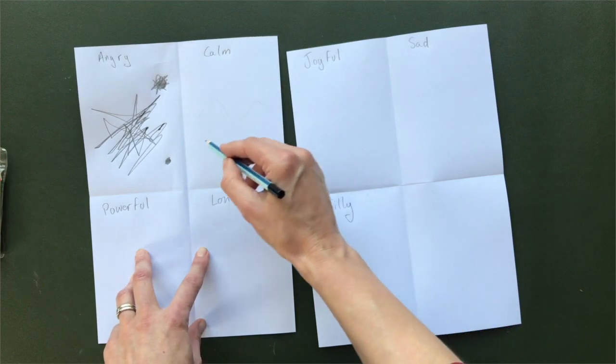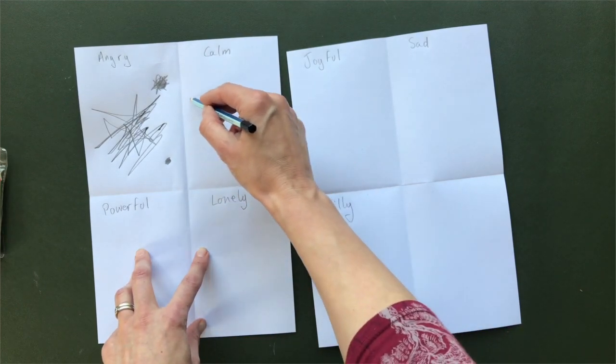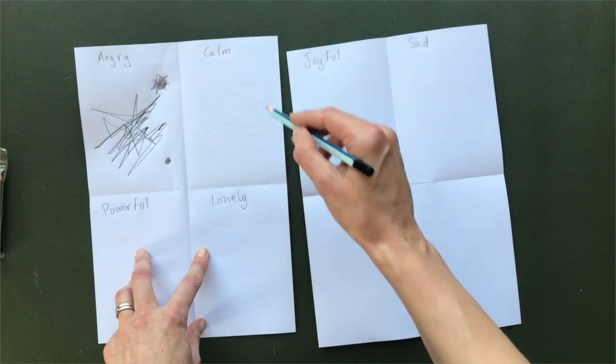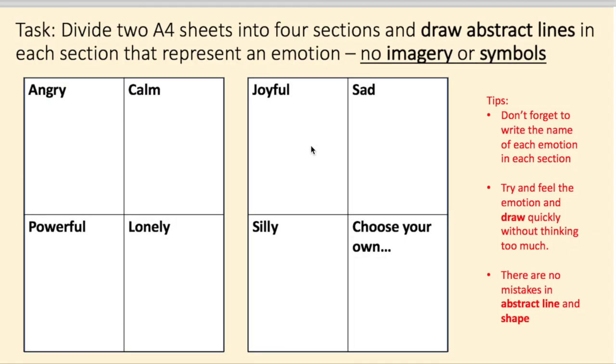And what do you feel when you feel calm? What do your calm lines look like? Or your joyful lines? Do they come up or do they spin round? And the last one, you could just choose your own emotion.